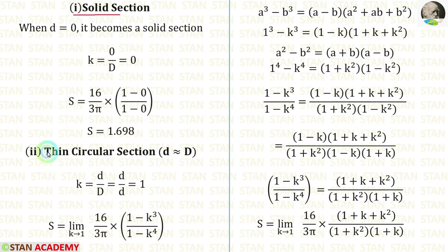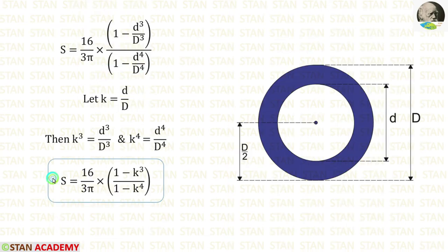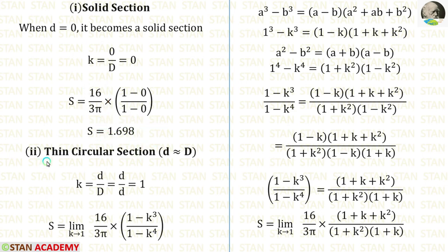Finally, we have calculated the shape factor for a hollow section, which is equal to 16 by 3pi into 1 minus k cubed, by 1 minus k power 4. Now let's see some special cases. For a solid section, small d will be 0, so k equals 0 divided by D which is 0. After applying 0 in the equation, we are getting 16 by 3pi, and when we calculate it we get 1.698.